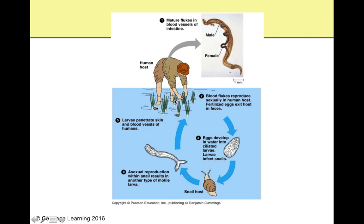In the snail, they reproduce asexually to make a different type of larvae. This other larva then swims off and gets into the blood and into the skin of a human who's back in the river downstream — maybe doing dishes or getting drinking water. They have little sores on their feet from walking around barefoot or in sandals. That little larva crawls up into their blood, gets into the intestine, and it all starts over again.